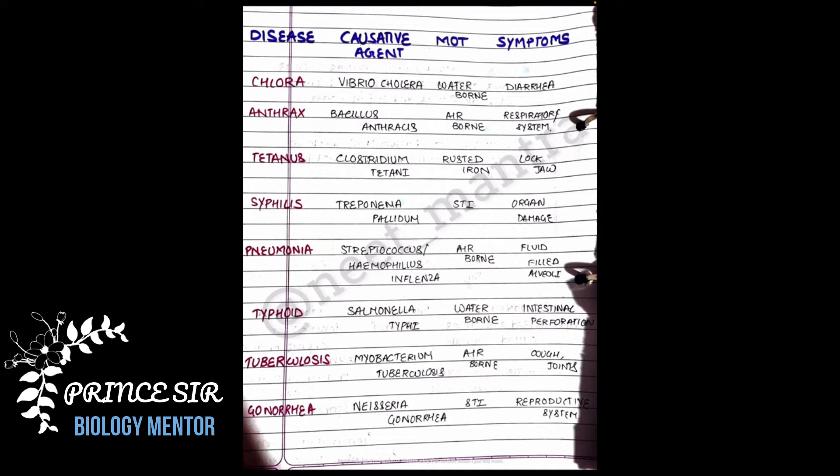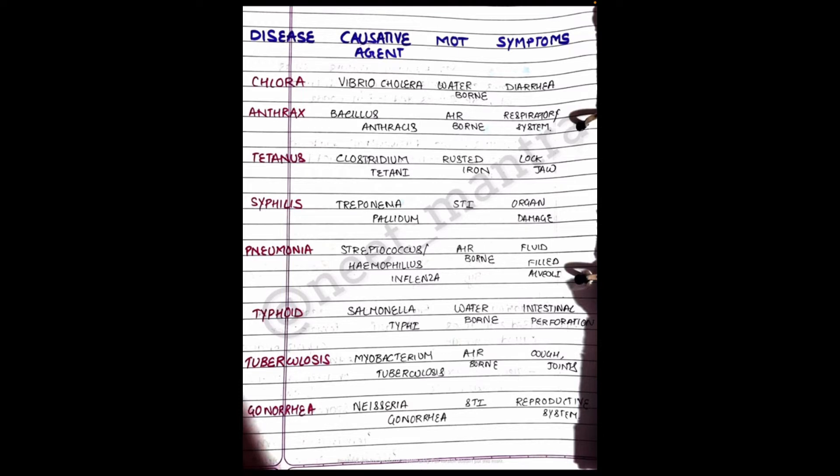The first one is Cholera. It is caused by Vibrio cholerae. Mode of transmission is waterborne, meaning it is transmitted through contaminated water bodies. Symptoms include diarrhea.